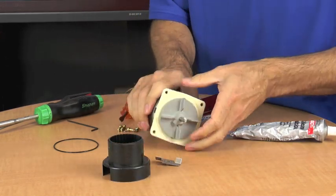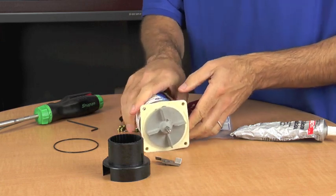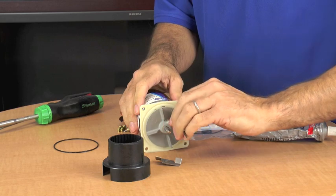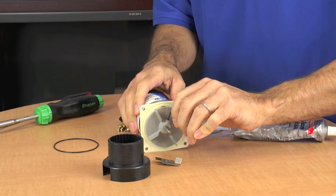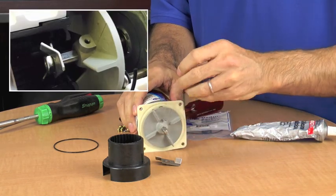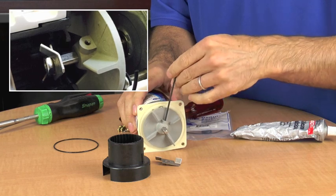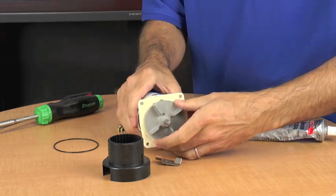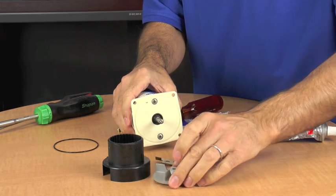Okay, so next is the impeller. So it has the 3/32nd Allen wrench. Just need to undo that. Don't need to take out this set screw all the way, just a couple of turns. And the impeller will slide off the shaft. There we go.